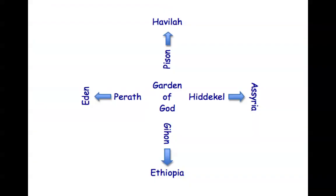You've all seen this graphic. This is out of Genesis 2, where God planted a garden eastward in the land of Eden. A river came out of Eden, watered the garden, and from there it divided into four heads. The Pison flowed into the land of Havilah, the Hiddekel eastward into Assyria, the Gihon into Ethiopia. And the Parath — it doesn't say where it flowed, but because Eden was already introduced as the land where God planted the garden, I just connected those dots. So I believe the Parath flowed into Eden, and that gives us a four-parted earth — these four areas of land bordering the garden of God.